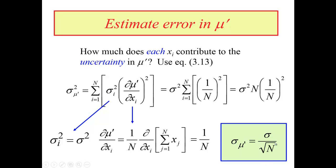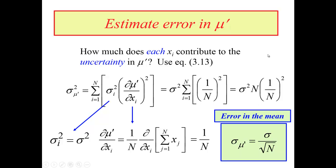It's important to understand the difference: the sigma in the numerator is the overall standard deviation of the entire data set, while sigma mu prime is the error in the mean. If we do repeated measurements of a quantity x sub i and want to report our best result, we take the mean value plus or minus the error in the mean. This shows how making n larger and larger tends to reduce the error in that mean value.